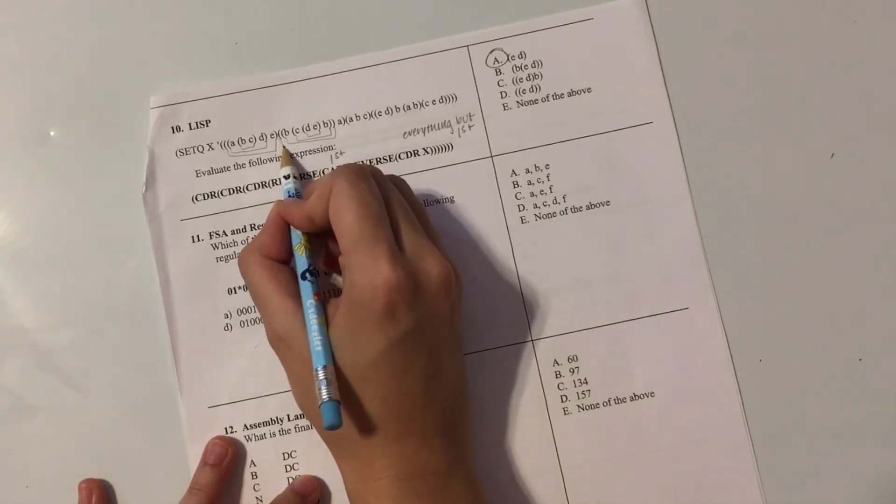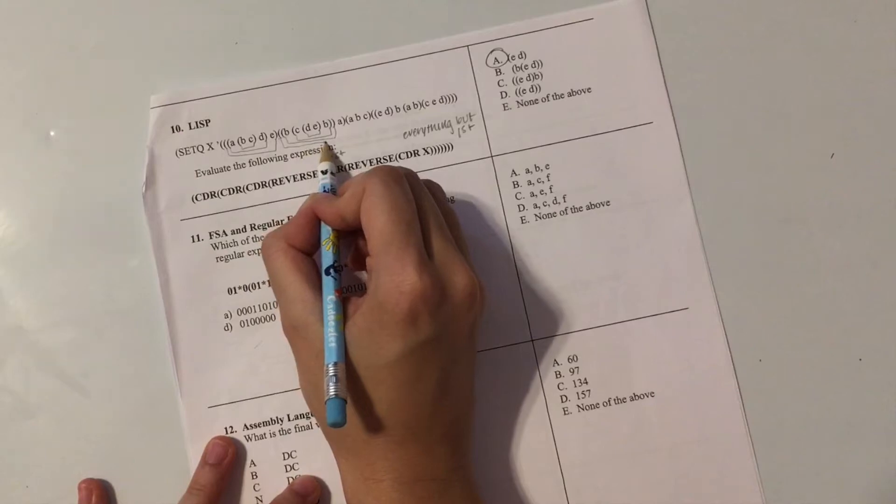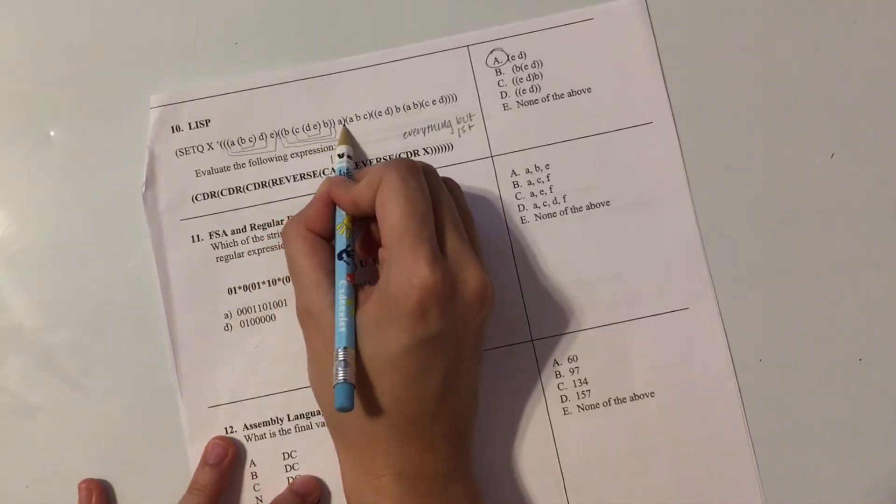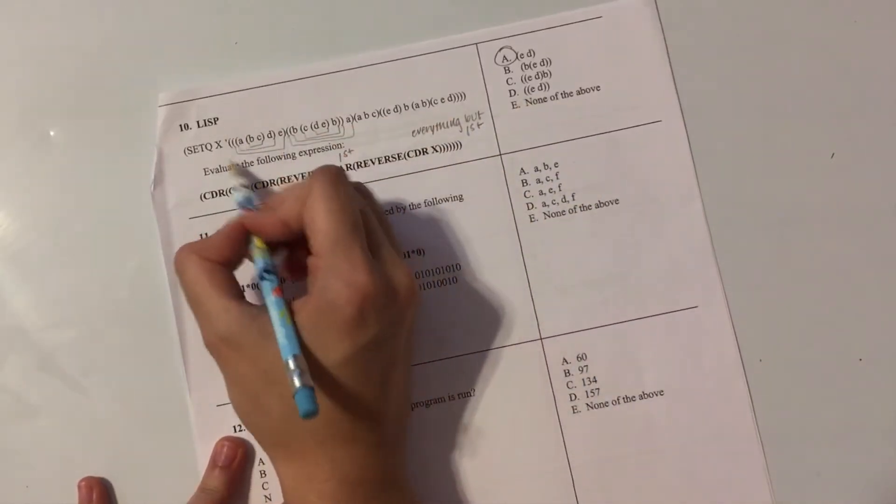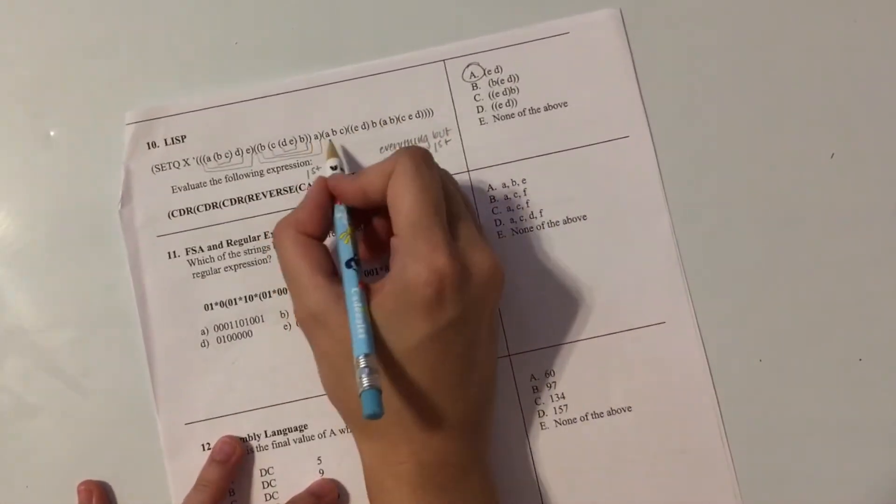And then we have this one last list encompassing all of them. So I see that we have one, two elements right now in this whole list.